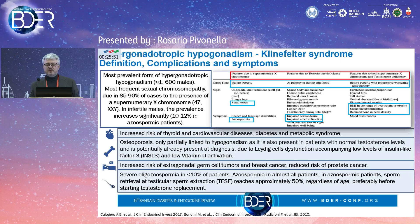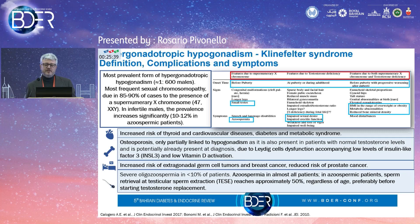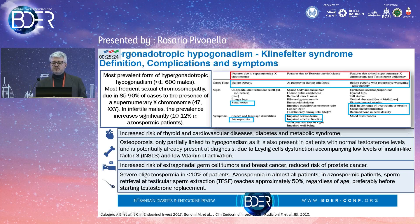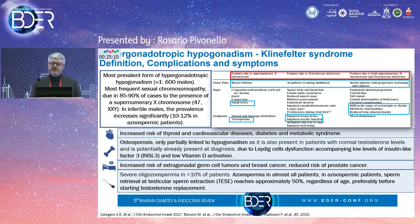Klinefelter syndrome is associated with many clinical symptoms and signs — some due to the additional X chromosome, and others mostly related to the hypogonadism. In the first group we can have changes in body proportions, some malformations, and especially small testis and azoospermia. In the second group, associated with hypogonadism, we can have gynecomastia, changes in body characteristics, and especially impairment of sexual function.